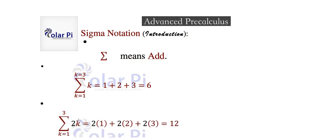The next example has 2k as the expression inside sigma. We start with k equals 1, go to k equals 2, then k equals 3. We replace k with 1, 2, and 3, and sigma means put a plus sign in between. So we have 2 times 1 plus 2 times 2 plus 2 times 3, giving a total of 12.